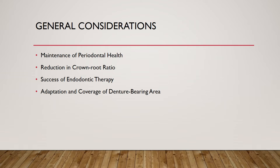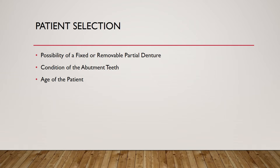General considerations include maintaining periodontal health, reduction in crown-root ratio, and success of endodontic therapy. The procedures involve taking care of the PDL, reducing the crown to approximately 2 mm remaining, performing endodontic therapy beforehand, and then using the abutment support to create an overdenture. There are four different types, to be discussed in the coming slides.